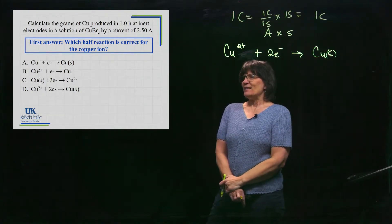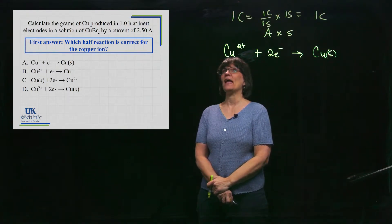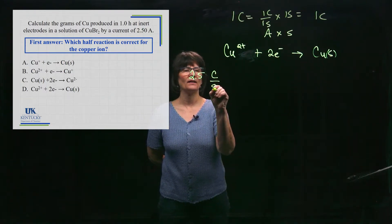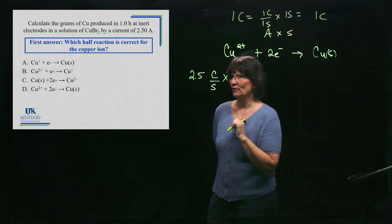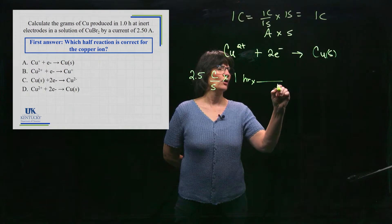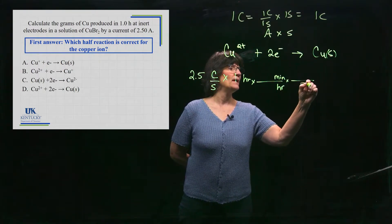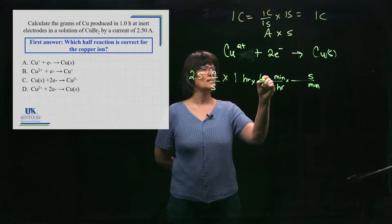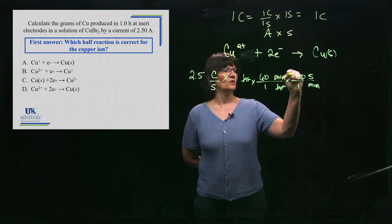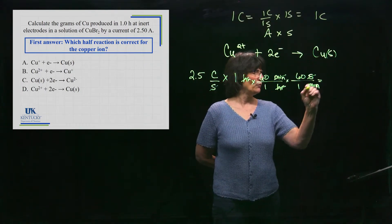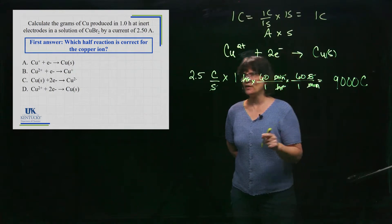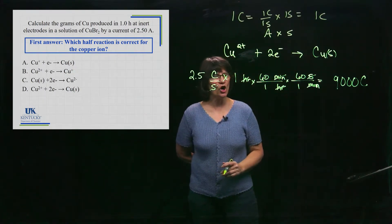We're given a time of one hour and a current of 2.5 amps, which equals 2.5 coulombs per second. I need to multiply by how many seconds this runs. Converting one hour: 1 hour × 60 minutes/hour × 60 seconds/minute. The hours and minutes cancel, leaving seconds, and the coulombs per second times seconds gives coulombs. The result is 9,000 coulombs of electrical charge.